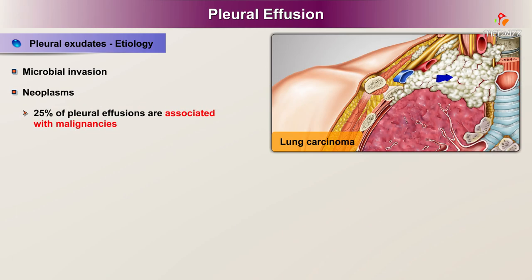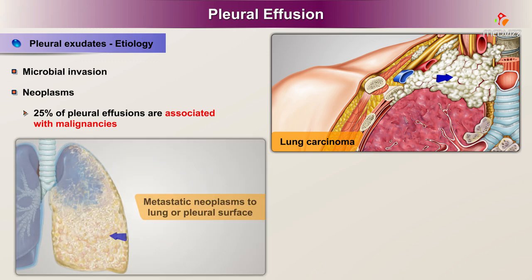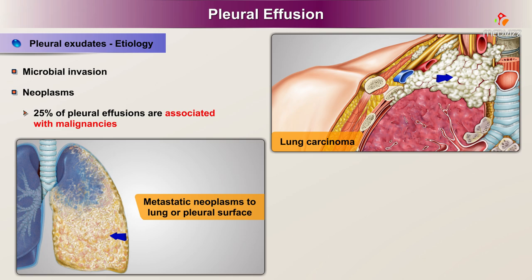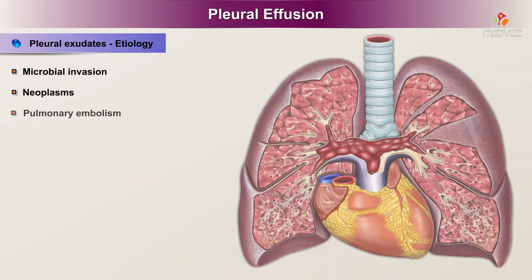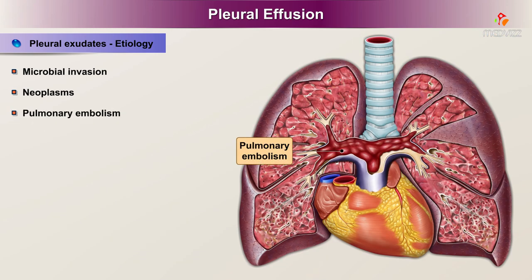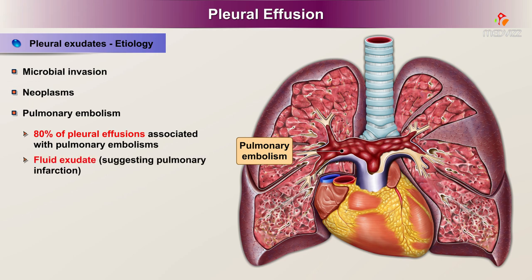Neoplasms account for approximately 25% of pleural effusions and include lung carcinoma, metastatic neoplasms to the lung or pleural surface, and mesothelioma. In pulmonary embolism, approximately 80% of associated pleural effusions are exudates, suggesting pulmonary infarction, while in approximately 20% of cases the fluid is a transudate.